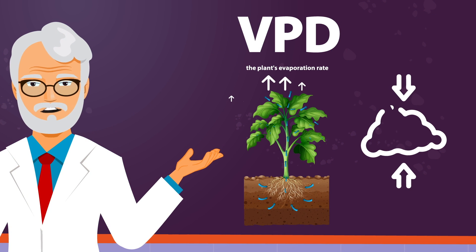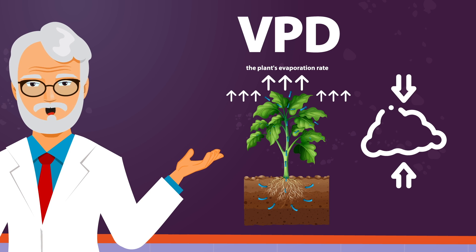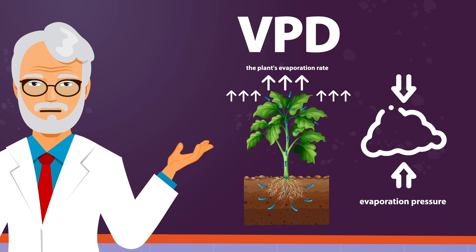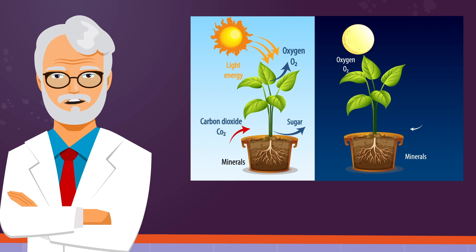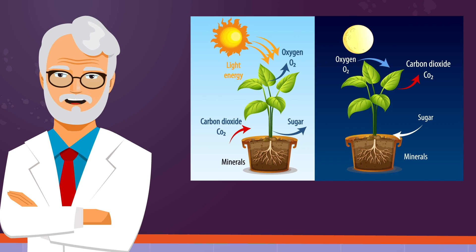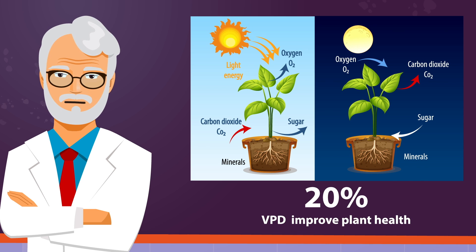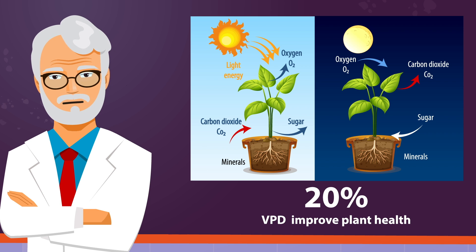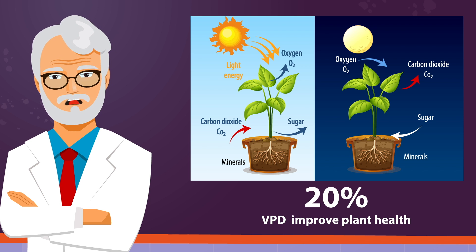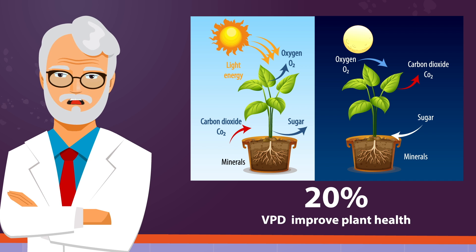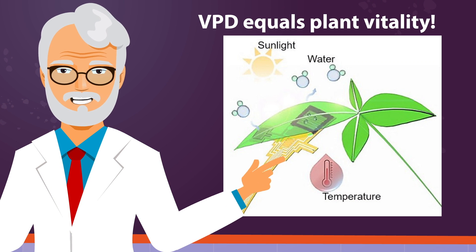In a nutshell, VPD is the difference between the plant's evaporation rate and the evaporation pressure of the surrounding air. A correct VPD both day and night will improve plant health, uptake of CO2, and yield up to 20%. The less stress plants are under, and the more comfortable and happier they are, the more efficient and productive they can be. VPD equals plant vitality.